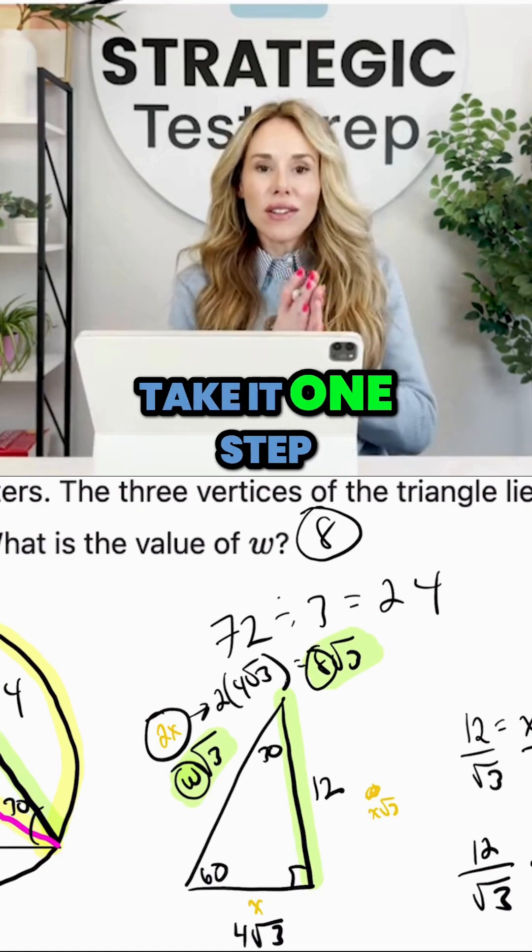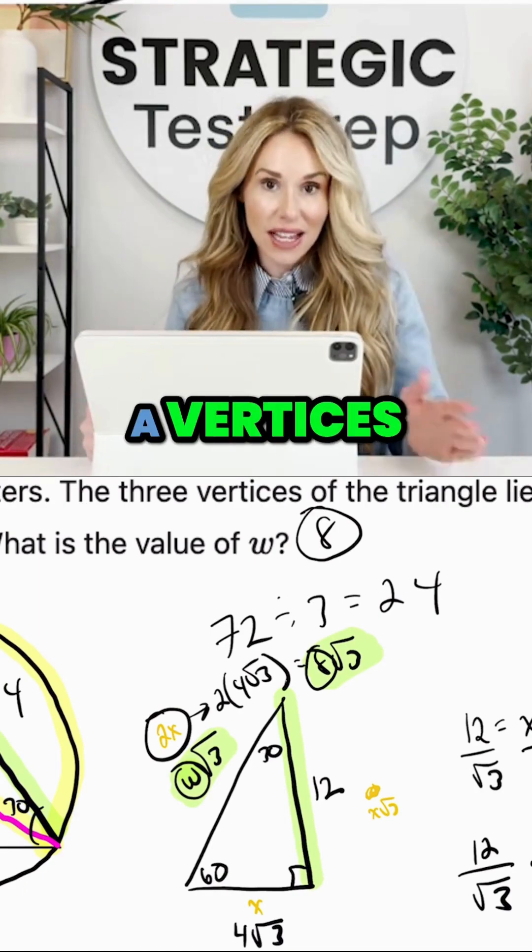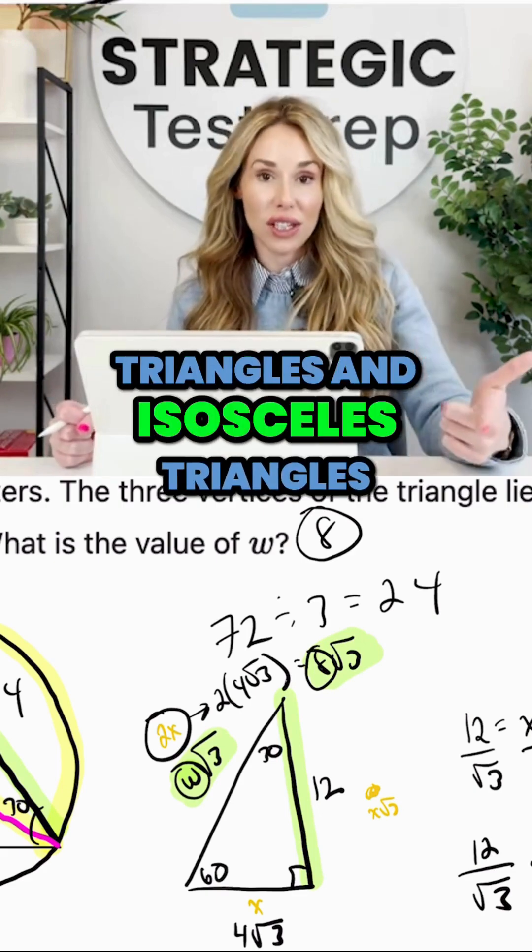Don't panic, take it one step at a time. The key is to draw your radius to a vertices, not down the middle, not where there's a gap. And then look for opportunities to make right triangles and isosceles triangles.